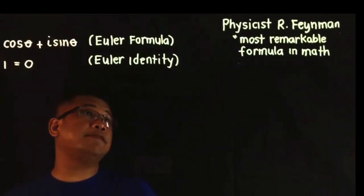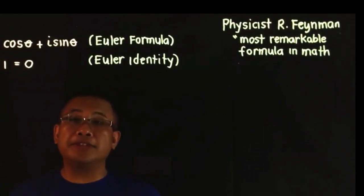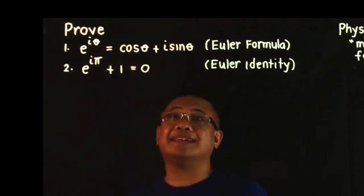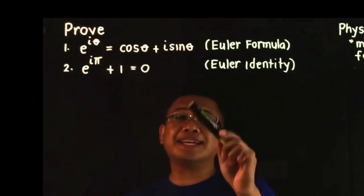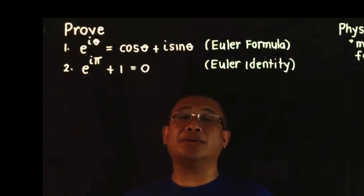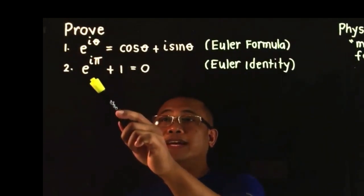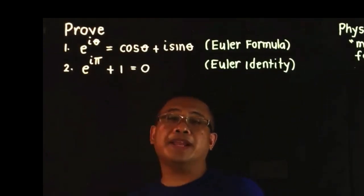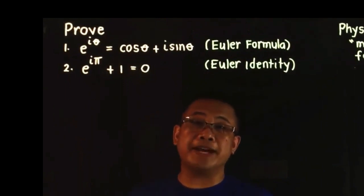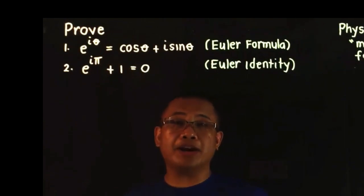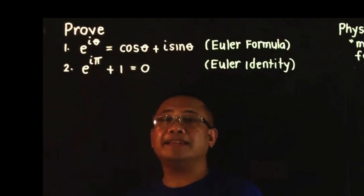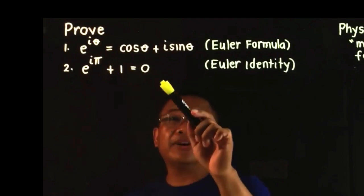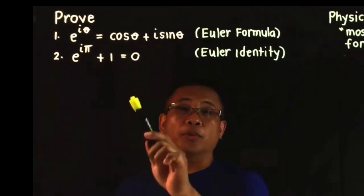The famous physicist Richard Feynman describes this formula as one of the most remarkable formulas in mathematics. The Euler formula is E raised to iθ equals cosine θ plus i sine θ. A special case of that Euler formula is the Euler identity: E raised to iπ plus 1 equals 0. This formula is oftentimes considered as the most beautiful formula in mathematics because the five most popular constants in math — namely the natural number E, the imaginary unit i, the constant pi, the constant 1, and the constant 0 — are all tied up together in just one formula.